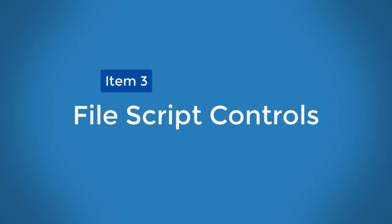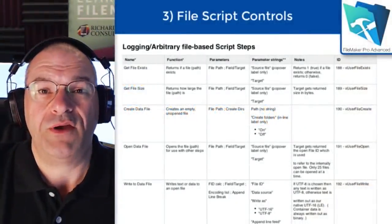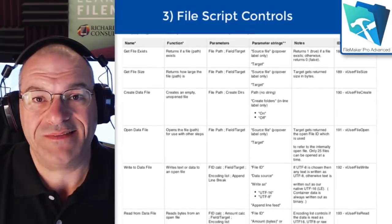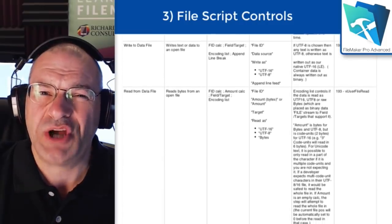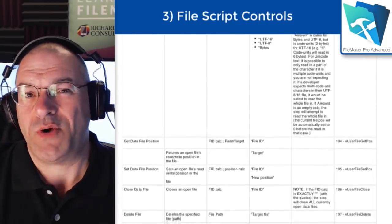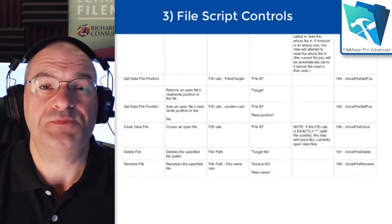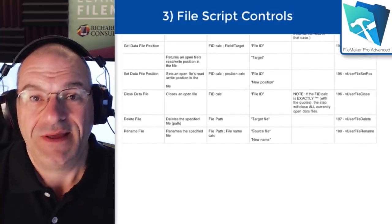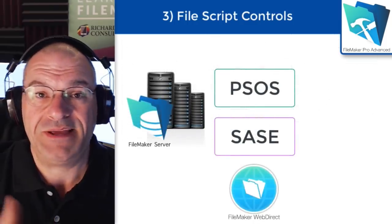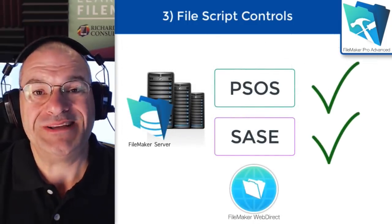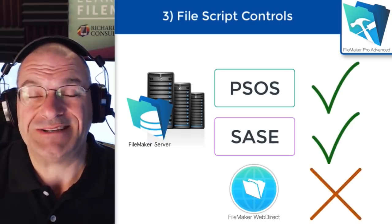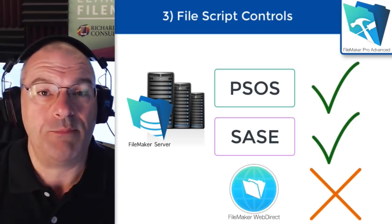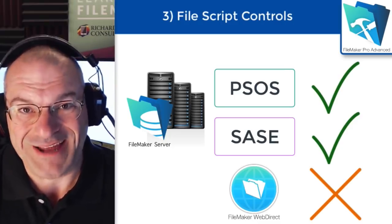In terms of our favorite features, my team has decided that the number one favorite feature is the file script controls that are part of the 18 release. Starting with FileMaker 18, you have precision script steps that allow you to create text files or log files, delete files, rename them — all sorts of file controls. This is largely targeted towards creating your own logs, outputting data in a specific way or format. It's pretty universal and you're really not limited in what this can do. The file controls work on all the clients, including PSOS on server and SASE on server. There is no support for WebDirect; however, you can still use WebDirect to call a PSOS script, which means you can access it backhandedly that way.